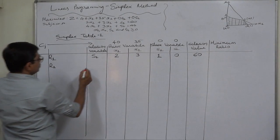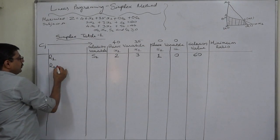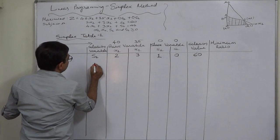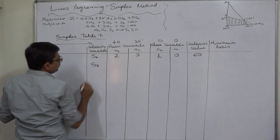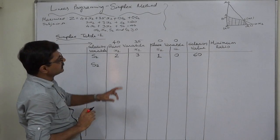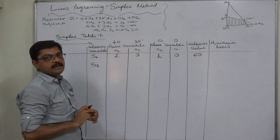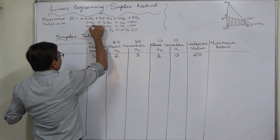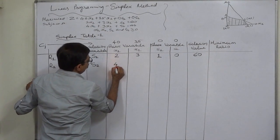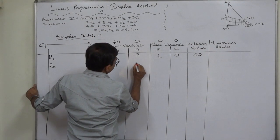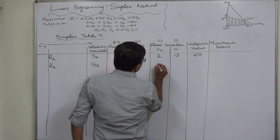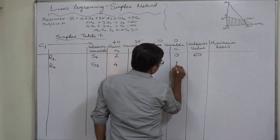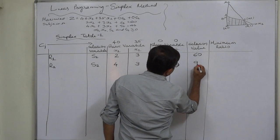Similarly, the second row R2 is prepared for the second inequality. S2 will be the solution variable because at present X1 and X2 are 0. In the second inequality, the coefficient of X1 is 4, the coefficient of X2 is 3, S1 has no entry so its coefficient is 0, the coefficient of S2 is 1, and the solution value is 96.